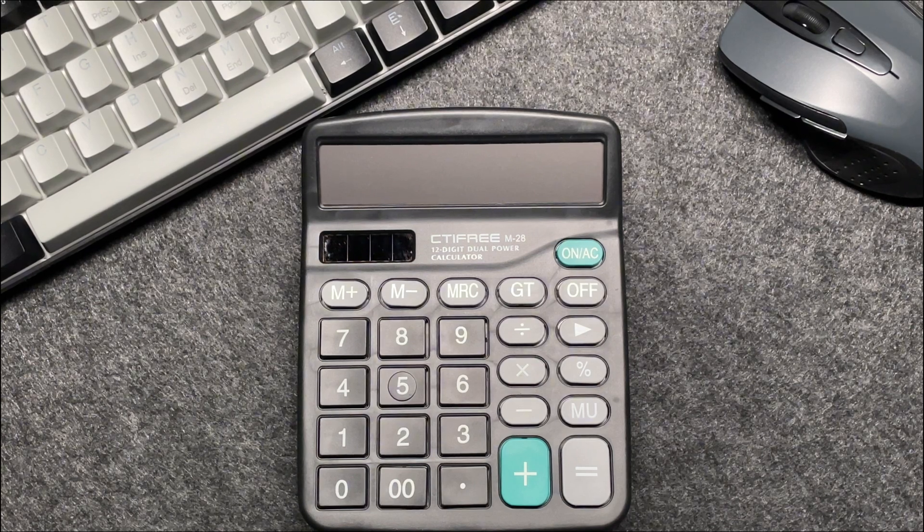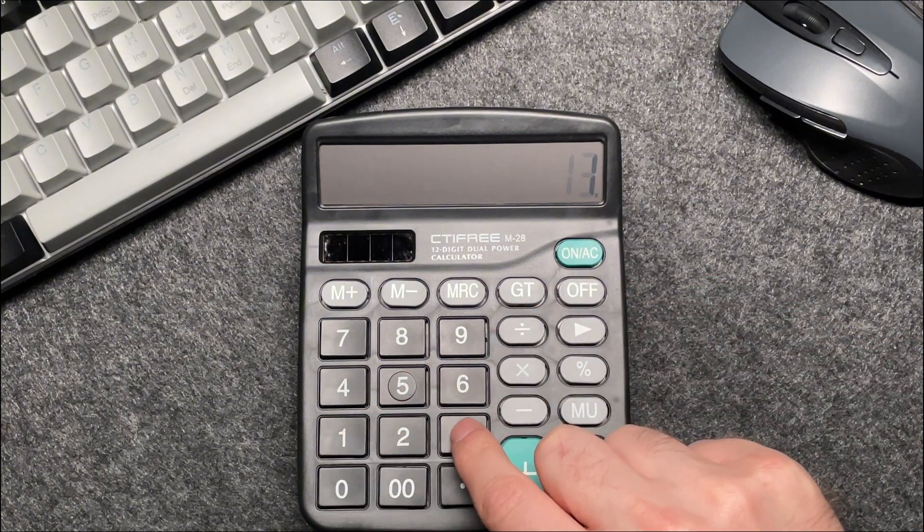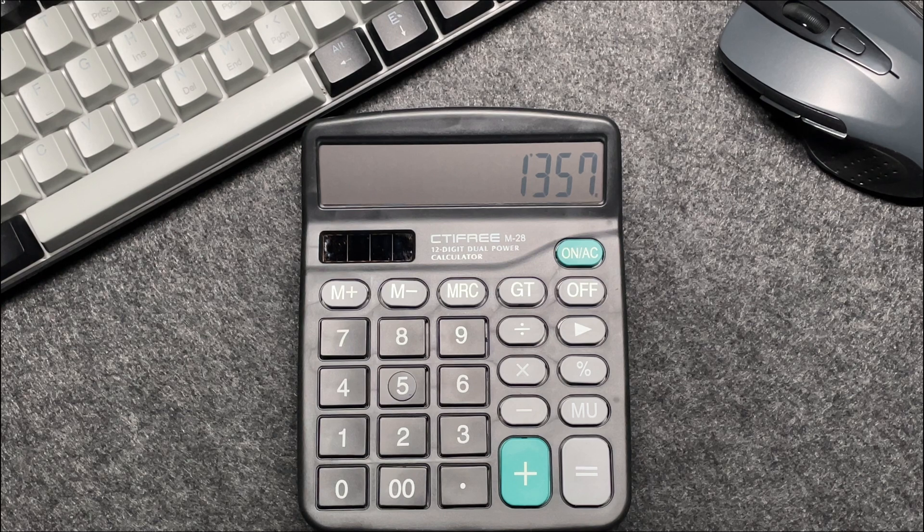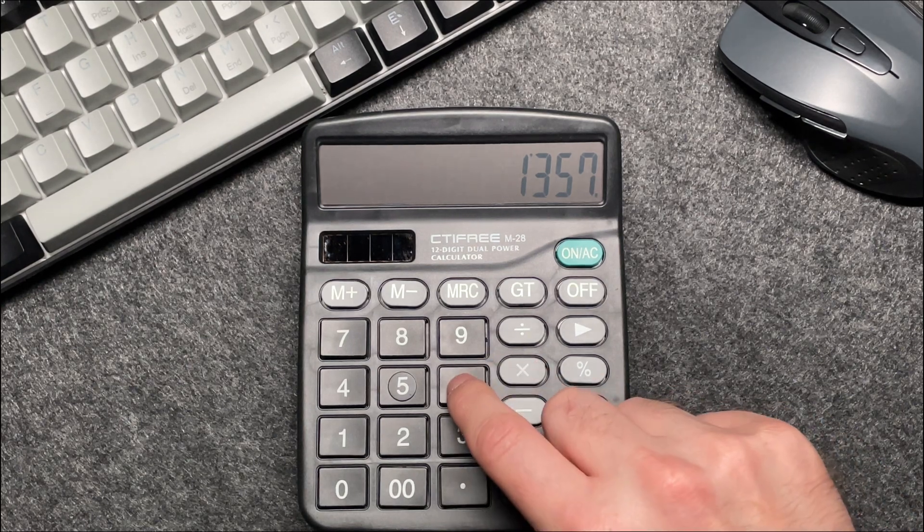Enter the original price, which is $1,357, into your calculator. Then we want to press multiply, and we want to multiply by 65.